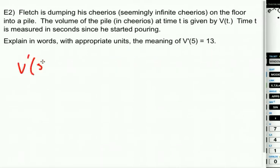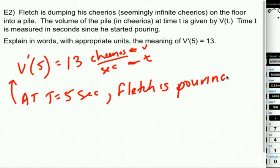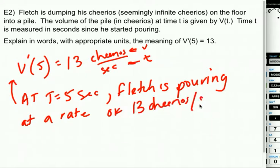V'(t) is the rate of change of the Cheerios. So V'(5) equals 13. Well, it's going to be measured in Cheerios, because that's how we were measuring volume, over seconds, because that's how we're measuring the time. So it's 13 Cheerios per second. And what this is saying is, at 5 seconds, at t equals 5 seconds, Fletch is pouring his Cheerios at a rate of 13 Cheerios per second. So what's actually coming out of his cup at 5 seconds is 13 Cheerios per second. That's the rate at which he's pouring.